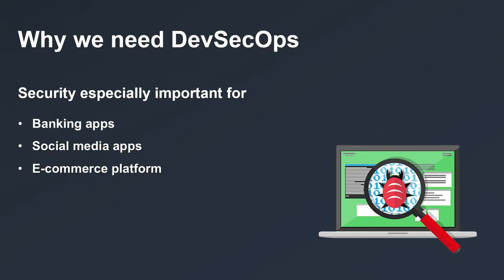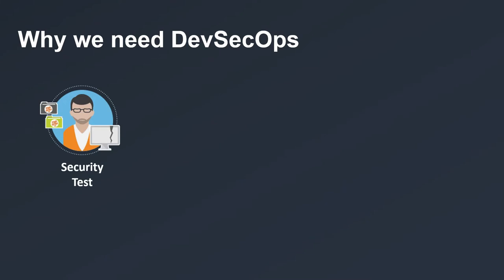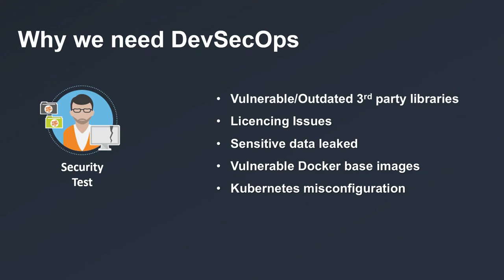Before deploying to production, the security team must test the new version for any vulnerabilities and security issues. What if the developer used a new library that has some vulnerability? What if it has special licensing requirements? What if passwords are exposed, or a container image has security issues?